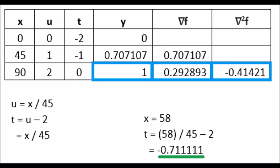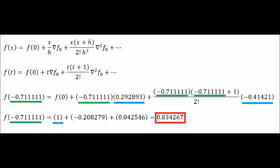What if I use a backward difference table instead? We should get the same answer in the end, but the intermediate steps will vary in the details. For one thing, the transformation from x to t looks different. x equals 58 degrees becomes t equals negative 0.71111 repeating.